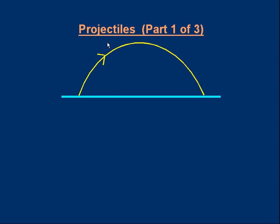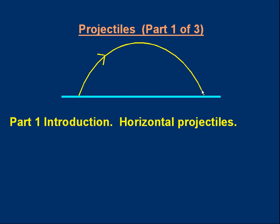Hello, welcome to this lesson on projectiles. A projectile is basically something that is thrown. So if you throw a ball, it becomes a projectile. There are three parts to the lesson, each one is a separate video. This is part one, a basic introduction, and we're going to look at horizontal projectiles — ones that start off moving in a horizontal direction.